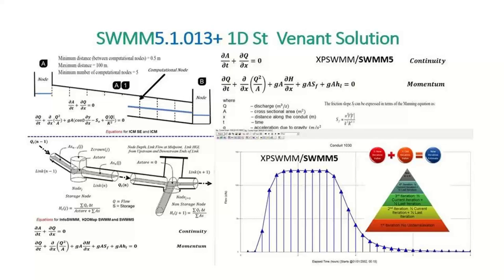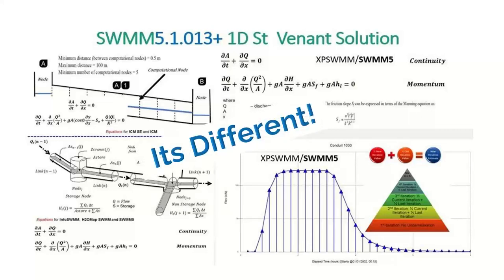A common question is: what's the difference between the ICM engine and the SWMM engine? The most concise answer is that InfoWorks ICM converges on volume across the entire network, whereas SWMM converges on flow across the entire network. InfoWorks ICM splits pipes into different computational nodes, while SWMM does a balance at each node with one flow assumed across the entire pipe. Visually, an ICM solution and a SWMM solution look pretty similar, and it's actually pretty easy to move back and forth between these different routines.